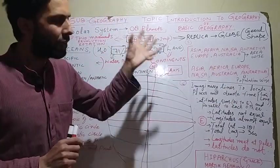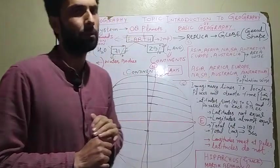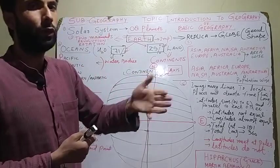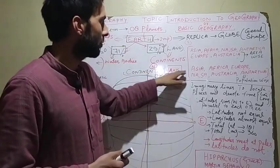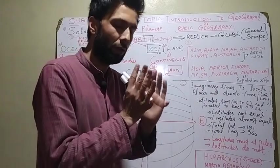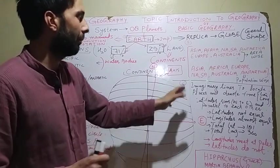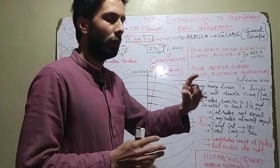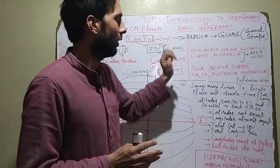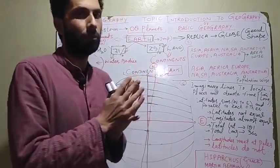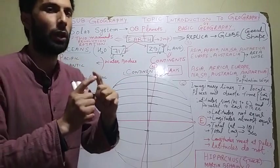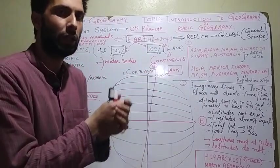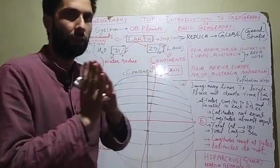Now the same seven continents population-wise. A continent may have a small area but more population, or vice versa. As per population, Asia is number one — so Asia is number one both area-wise and population-wise. Then comes Africa. Asia and Africa are the only two continents that lie at the same spot whether we take area-wise or population-wise — they are first and second in both.